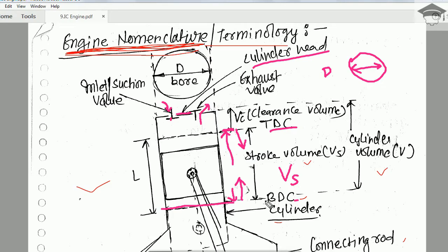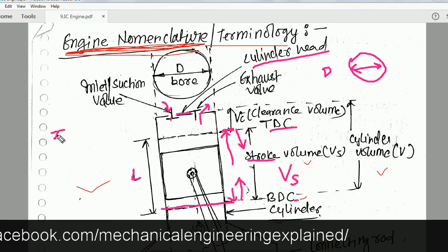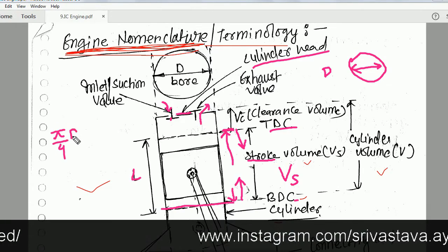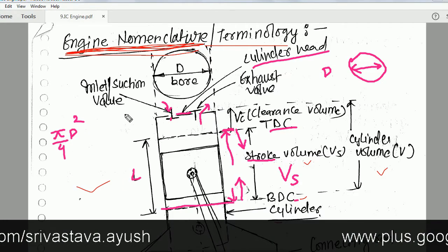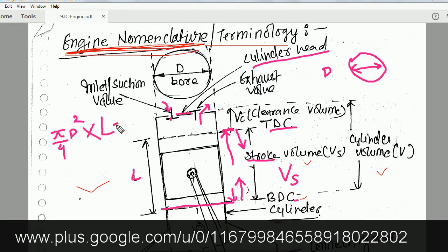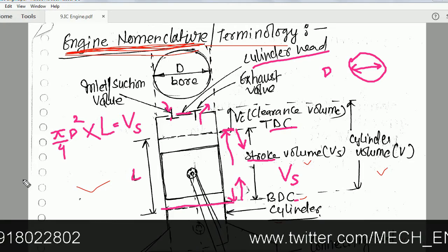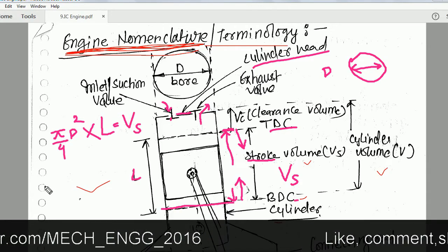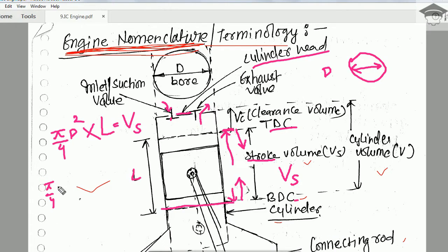The volume between top dead center and bottom dead center is the stroke volume. One stroke length is denoted by capital L. The stroke volume Vs is given by the formula: Vs = (π/4) × D² × L, where D is the bore and L is the stroke length. This is the area of the circular cross-section multiplied by the stroke length.